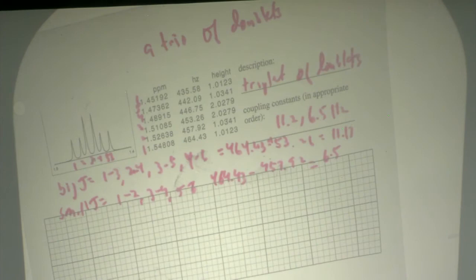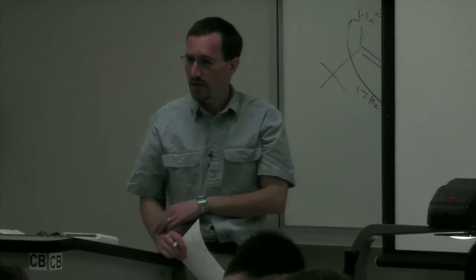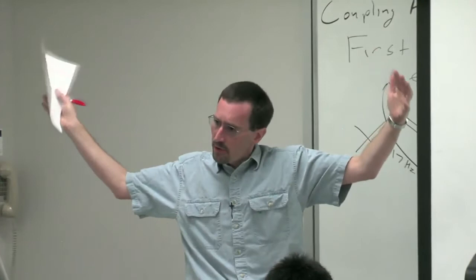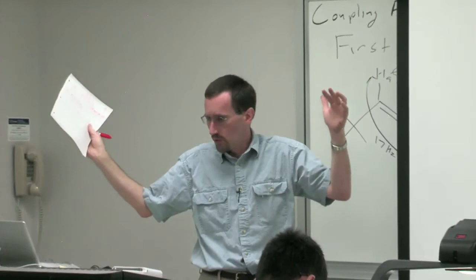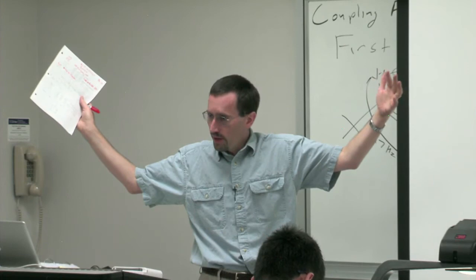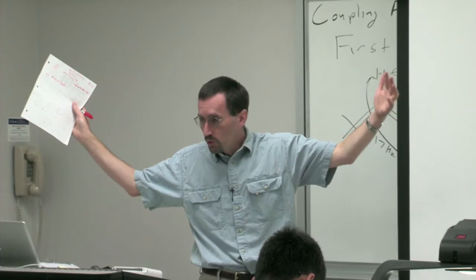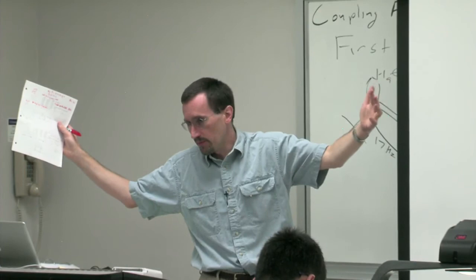That's the maximum resolution of the instrument. In carbon NMR, the sweep width is about 20 times larger - typically 20,000 hertz with 32,000 data points - so digital resolution is about 1 hertz. Therefore people typically report J values in carbon NMR to just the nearest hertz.